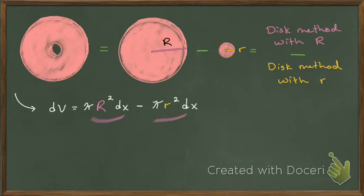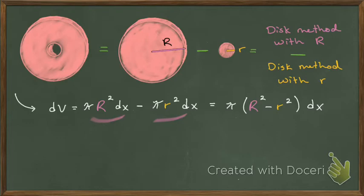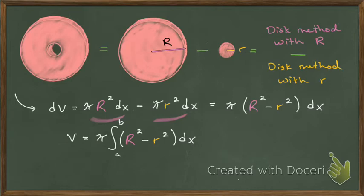I can combine those because they both have π and dx in common — factor a little bit and I see π times (capital R squared minus little r squared) dx. That comes from two separate disk methods that I bring together and integrate as one. When I integrate, I integrate from A to B, keeping those bounds the same.